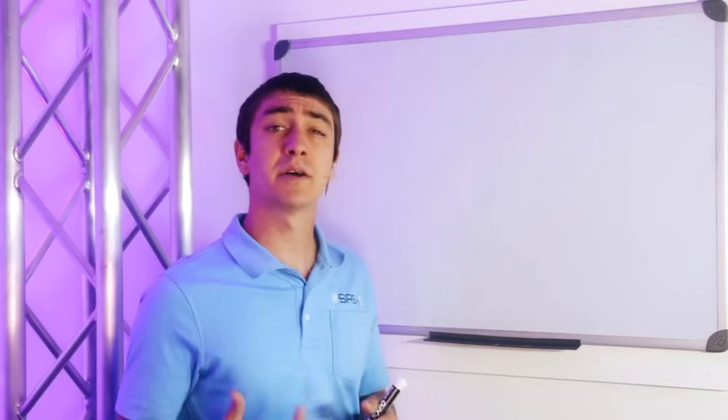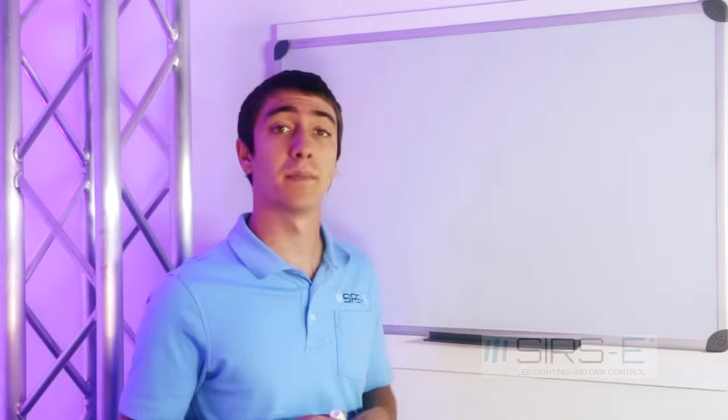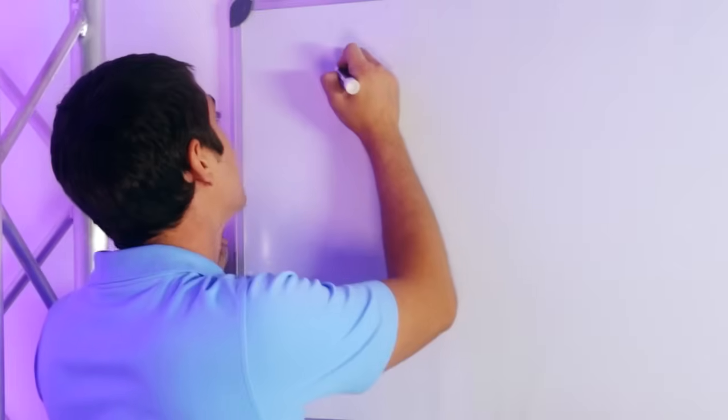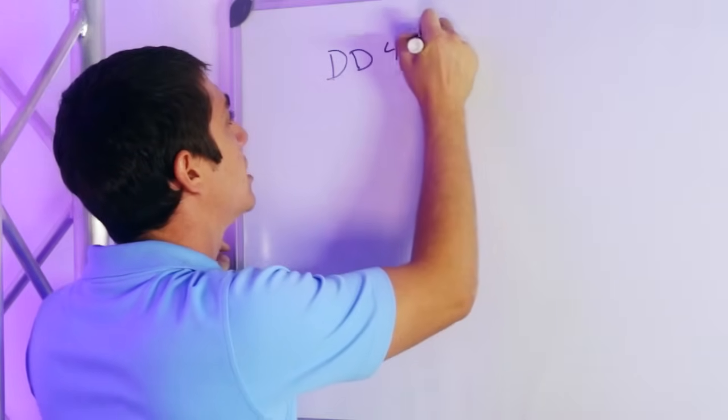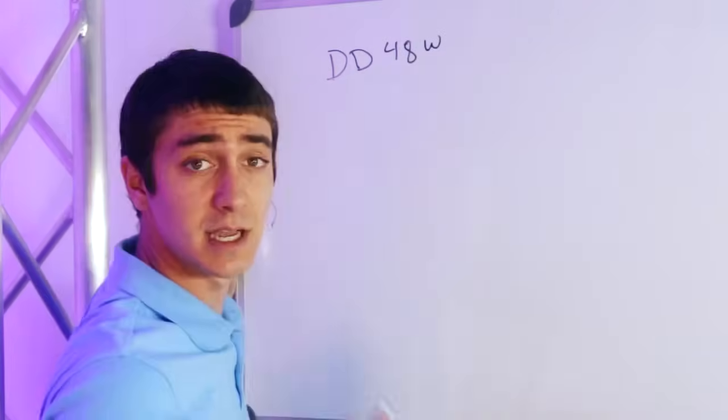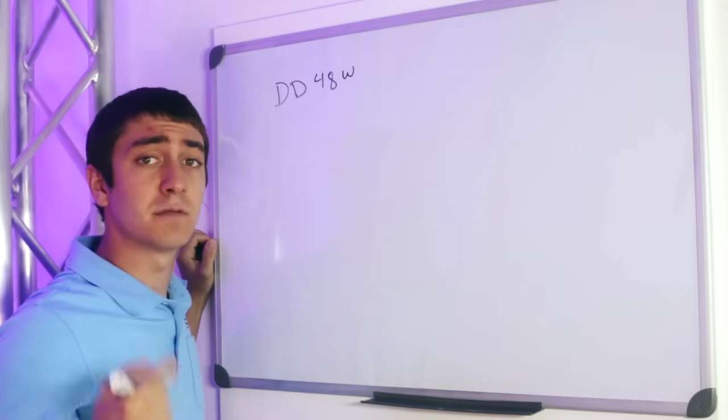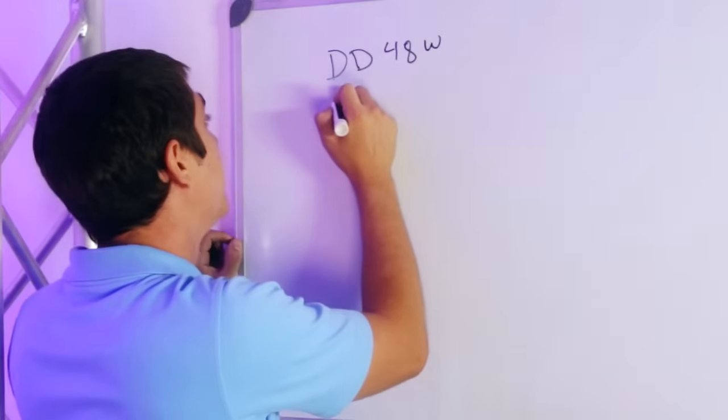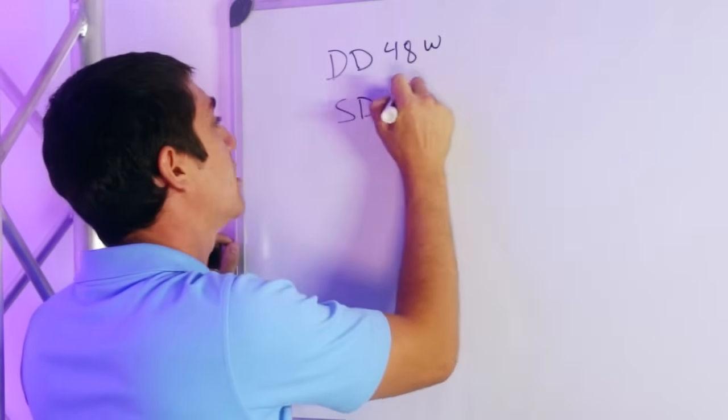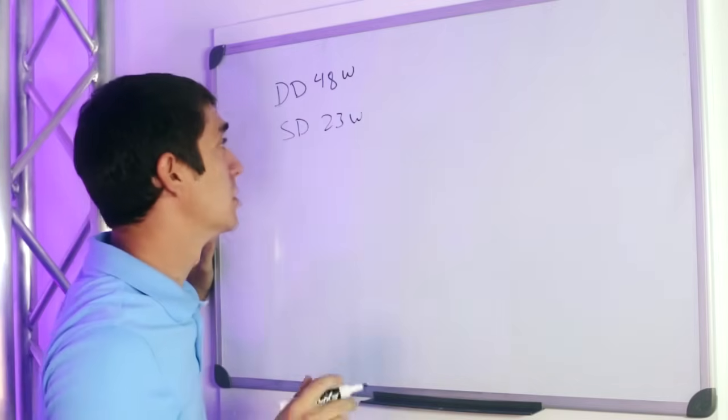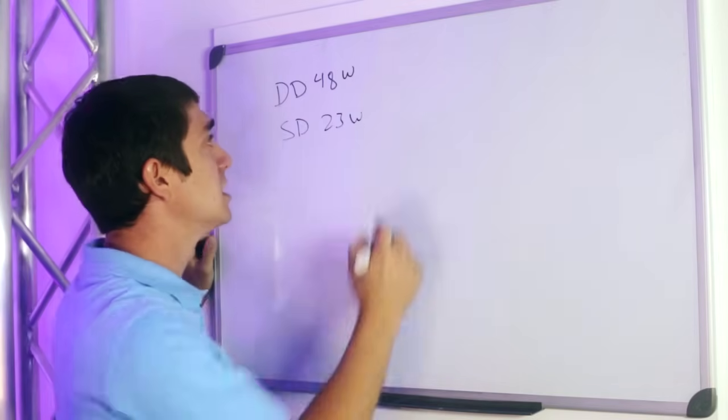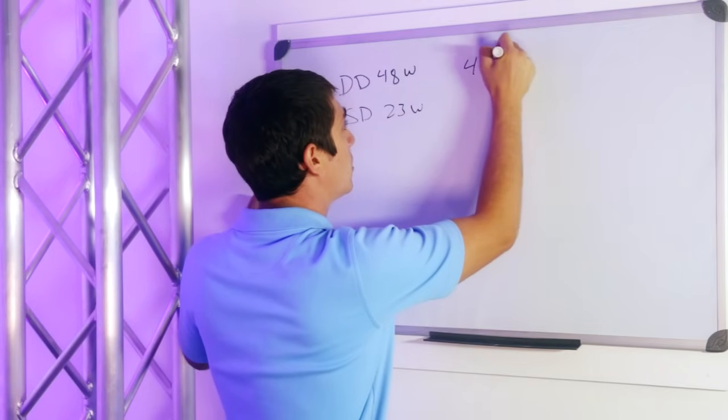So today we are going to talk about the RGB dual density and single density just to give you guys an idea of how to do it. And we are going to compare it all using a 400 watt power supply. So the dual density strip consumes right around 48 watts. That is at full intensity with all the colors on all the way. And then the single density consumes right around 23 watts, give or take a watt or two. And we are going to be using a 400 watt power supply.